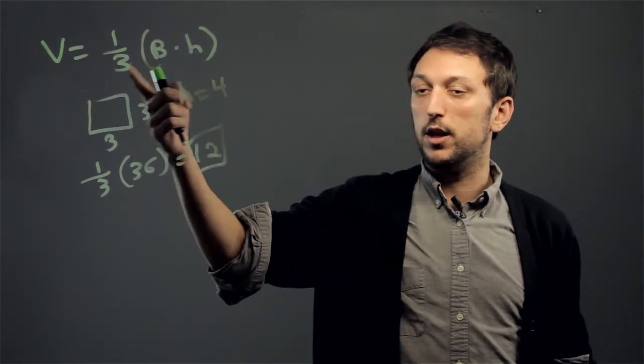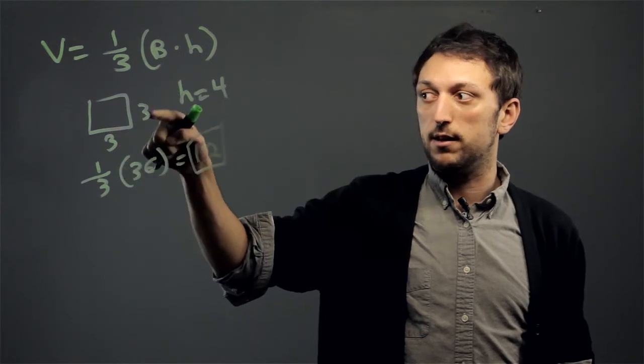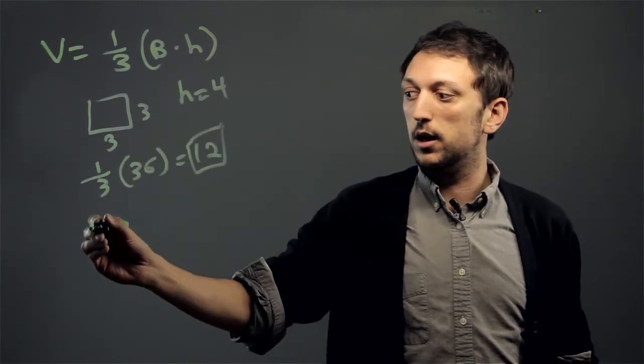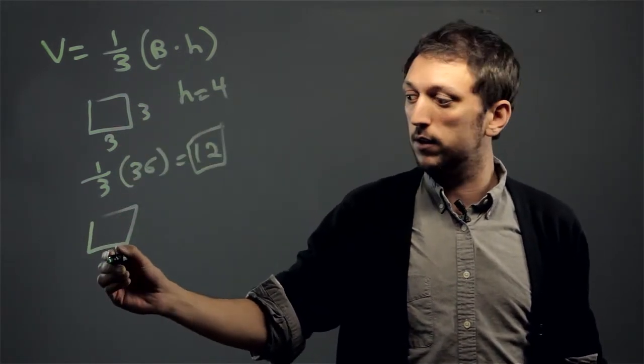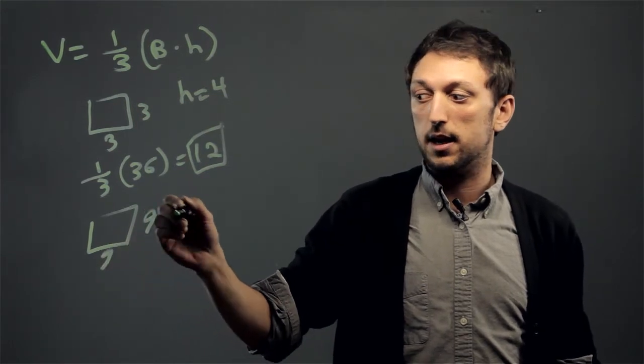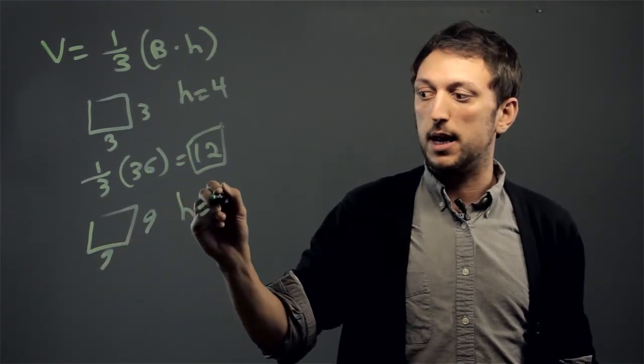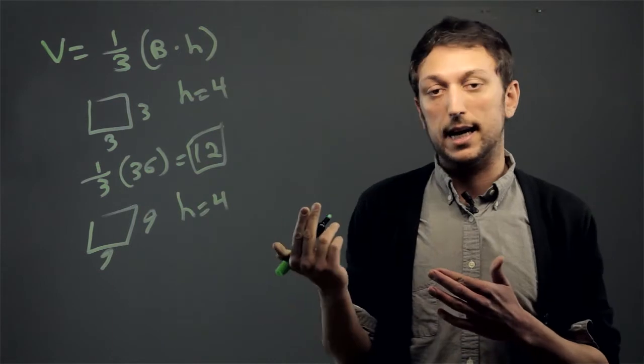Well, what happens when it triples? Instead, now the square base is 9 by 9. The height is going to remain 4 because the height is not a side.